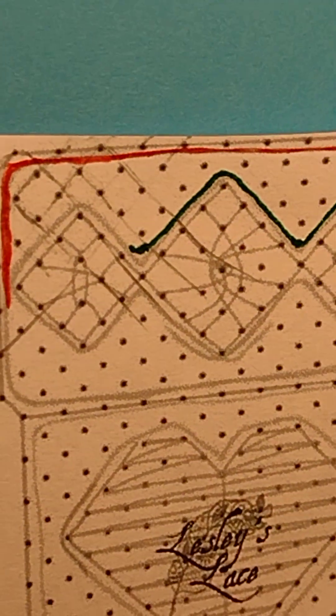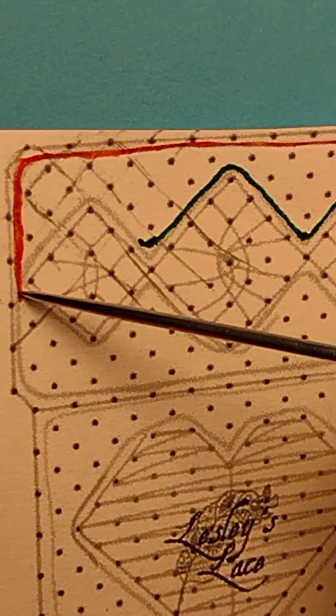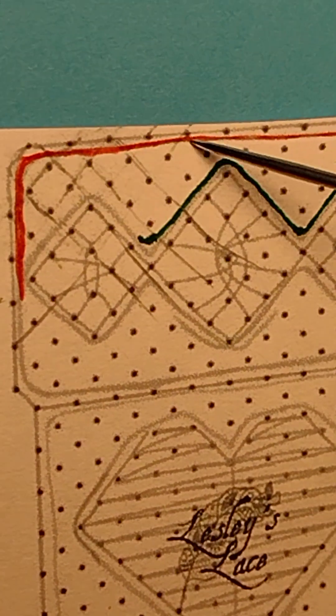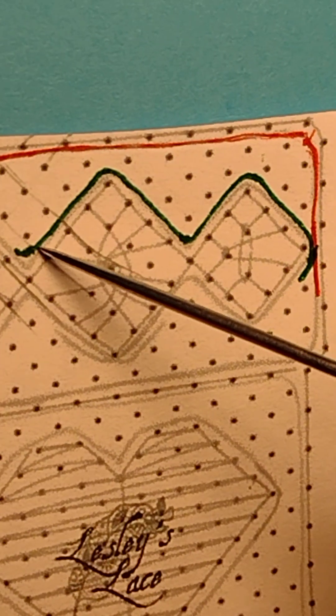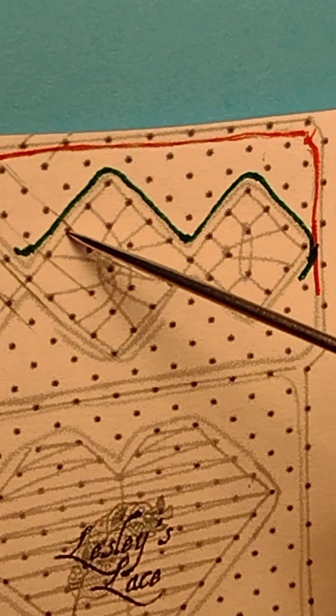This is what it looks like in a drawing. The red that I've already put on goes right around the very edge and the green is going to go in between these two rows.